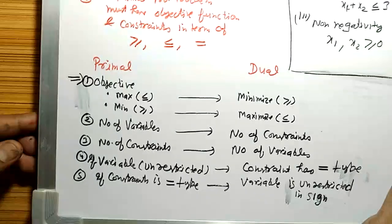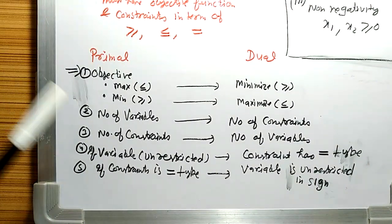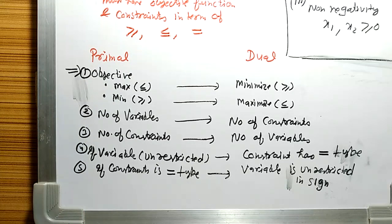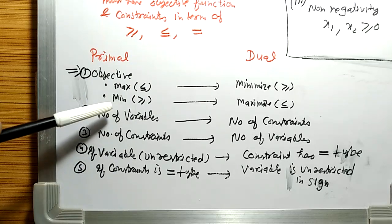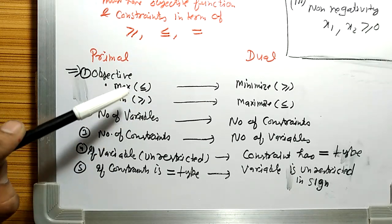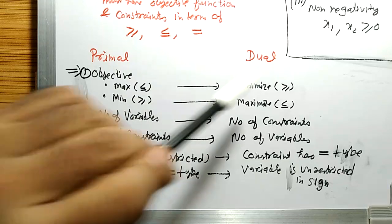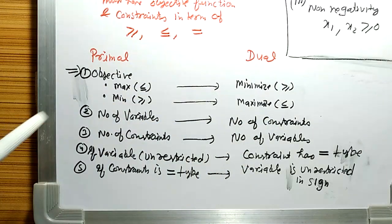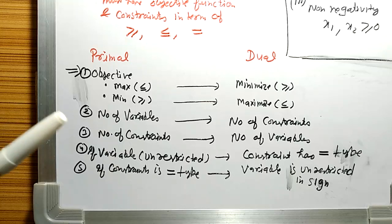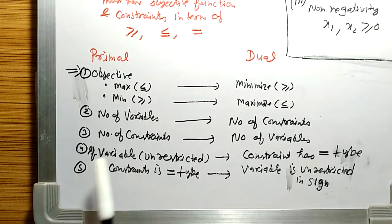Rule number one: the objective function will either be maximize or minimize. If it is maximization, the constraints will have a less-than-or-equal-to sign; if it is minimization, the constraints will have a greater-than-or-equal-to sign. When we convert to dual form, these signs convert — maximization becomes minimization and minimization becomes maximization.